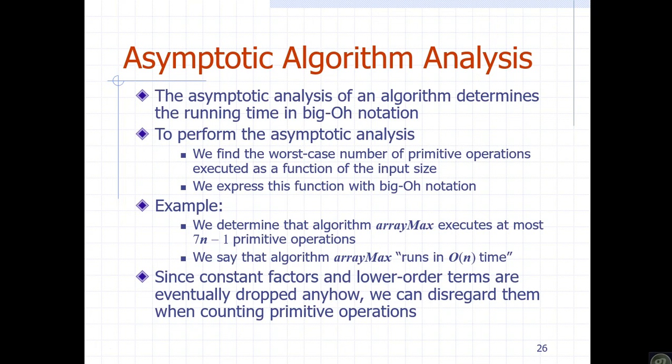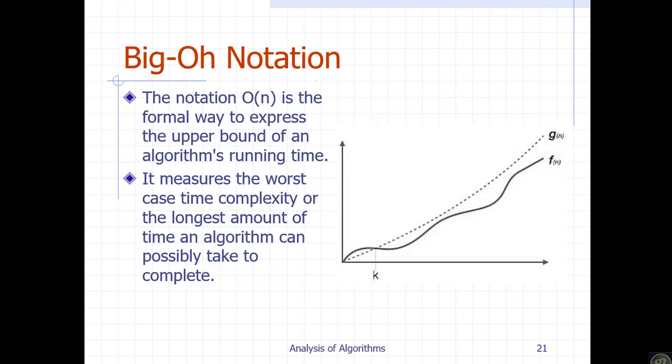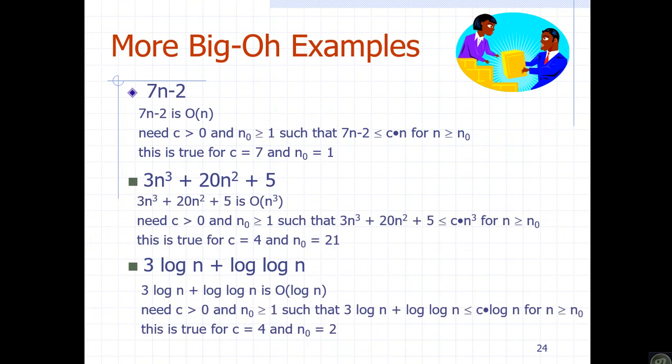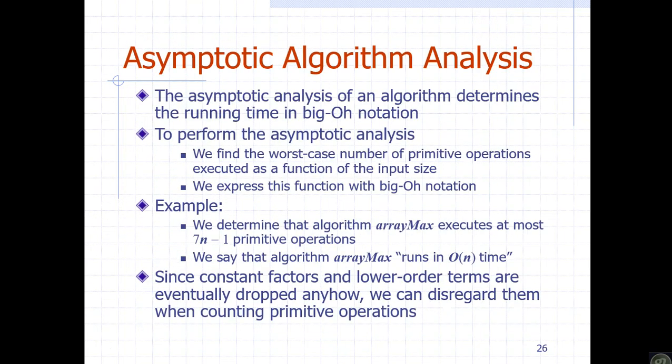Asymptotic analysis is used to determine the running time and upper boundary — the maximum time — of an algorithm. To perform asymptotic analysis, the worst case gives the first and most important bound on the algorithm's performance.